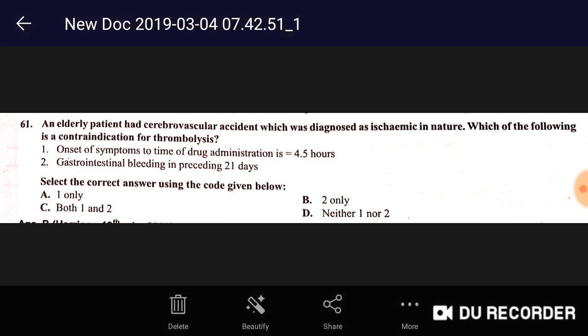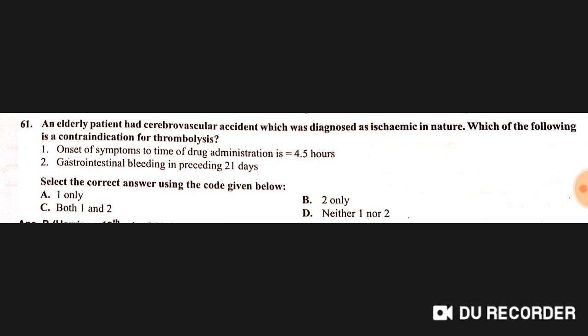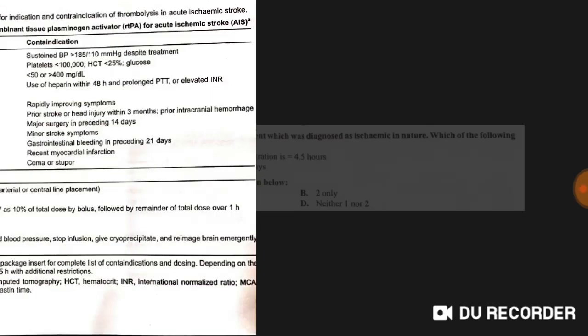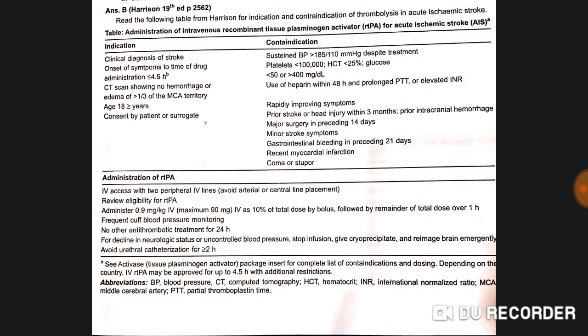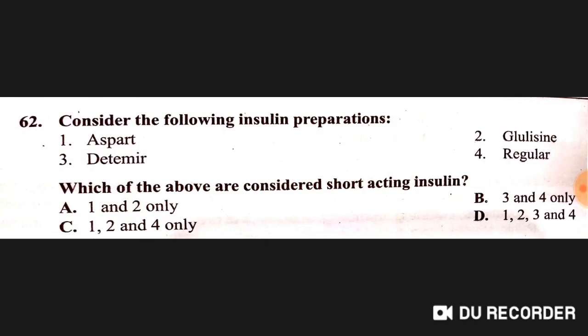An elderly patient had a cerebrovascular accident diagnosed as ischemic in nature. Which of the following is a contraindication for thrombolysis? Option A: onset of symptoms to drug administration is 4.5 hours. Option B: gastrointestinal bleeding preceding 21 days. The answer is B — gastrointestinal bleeding is a contraindication because thrombolysis aggravates bleeding.